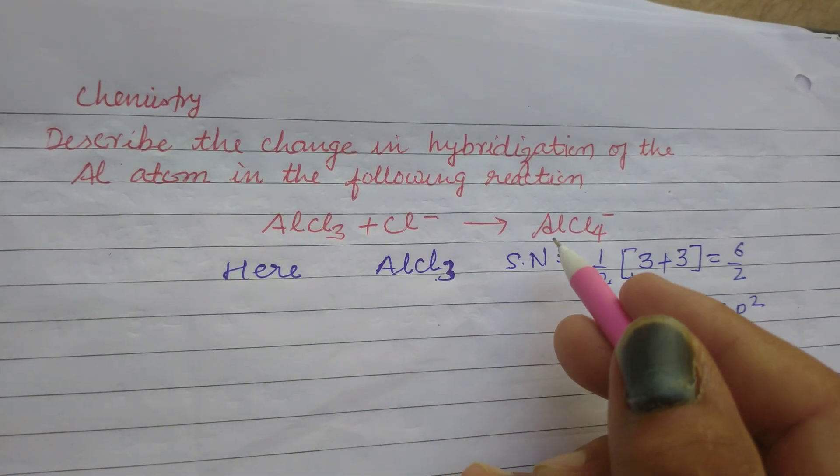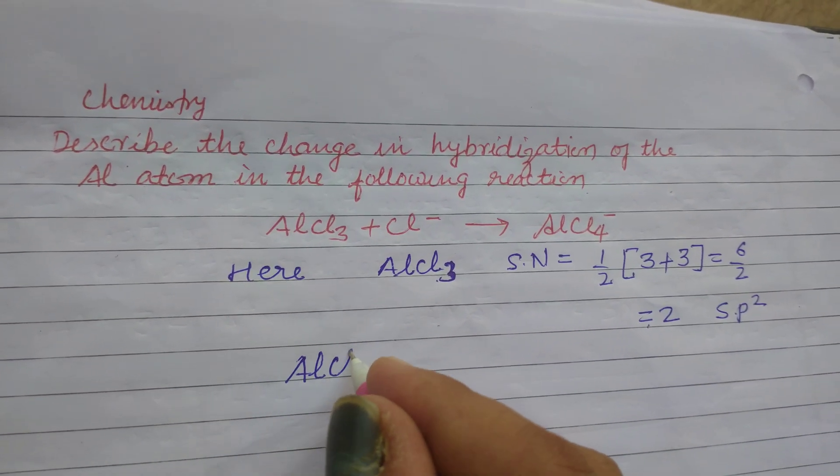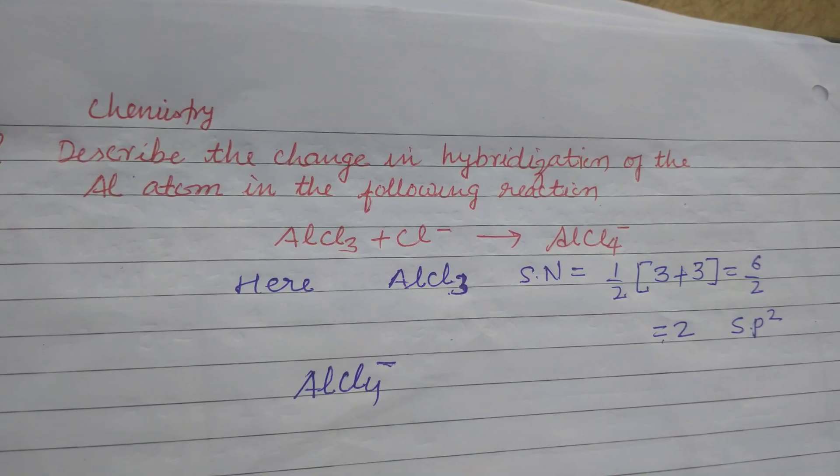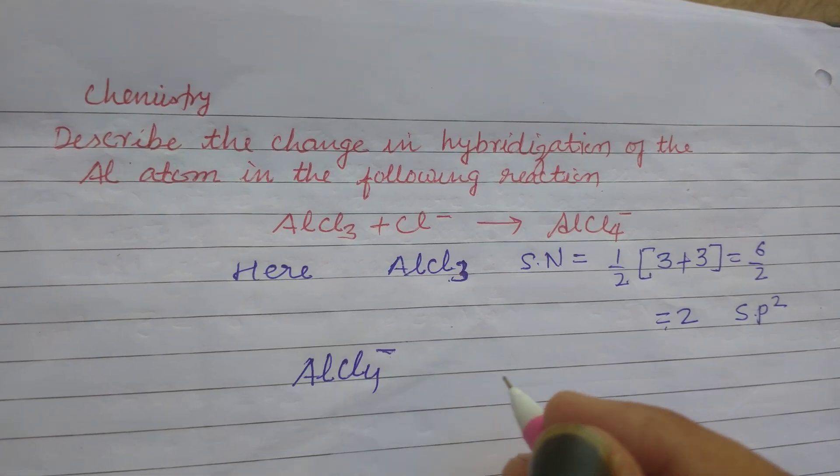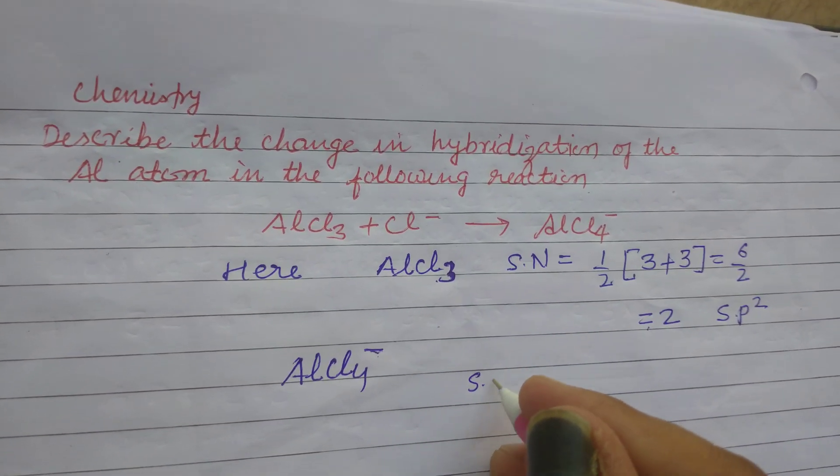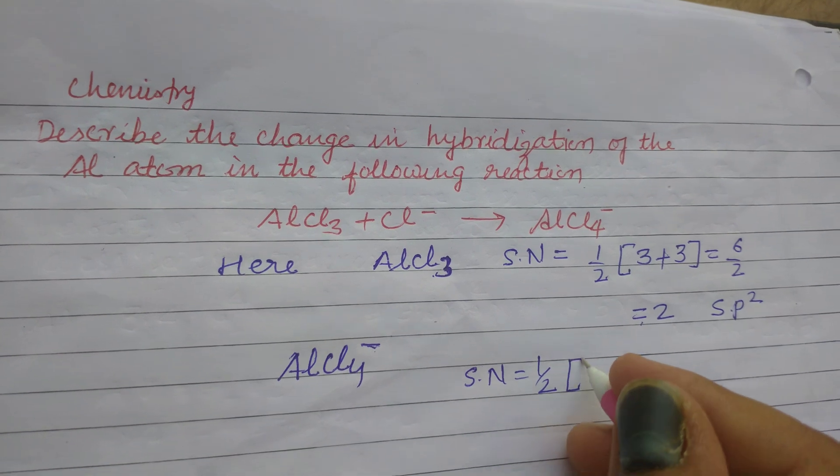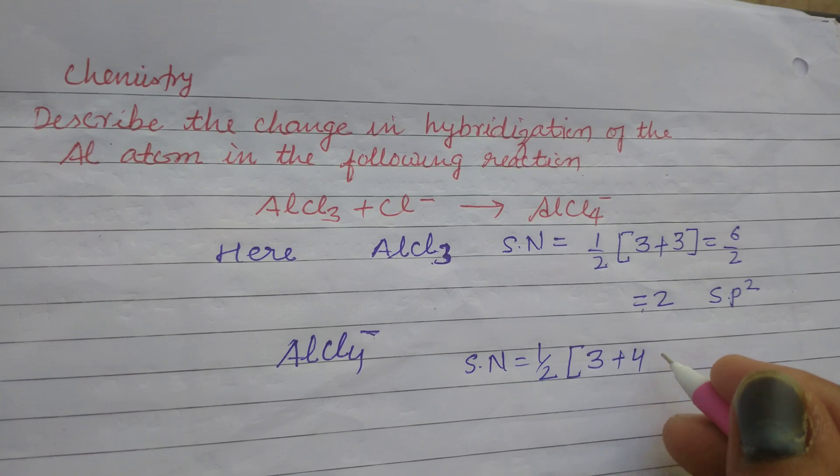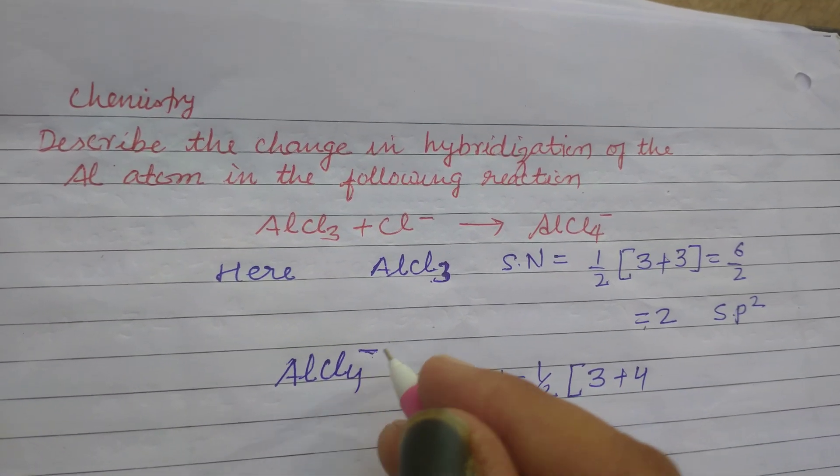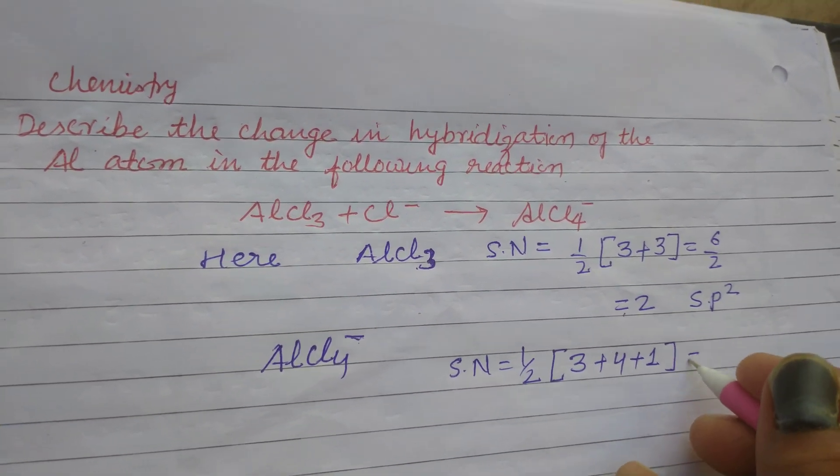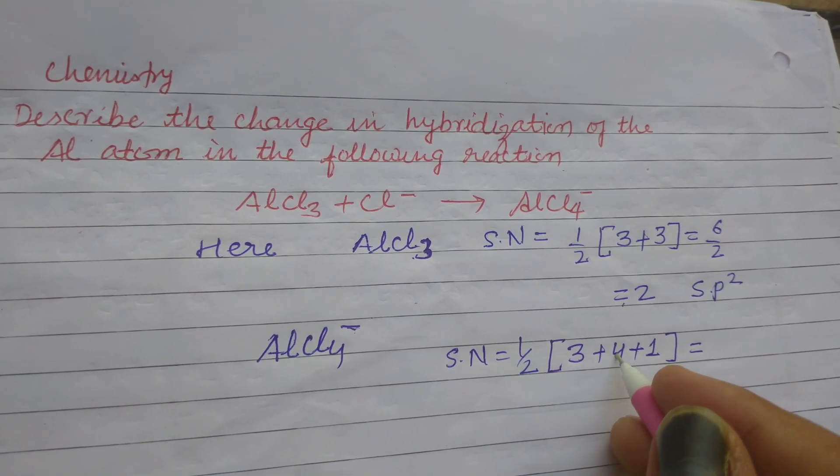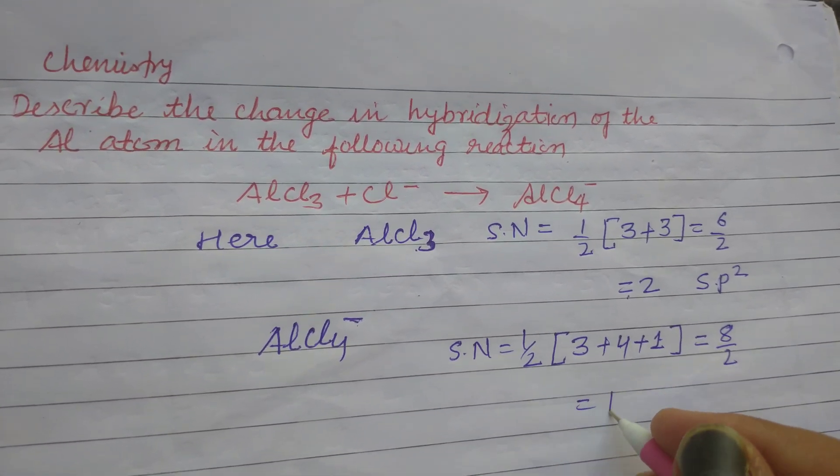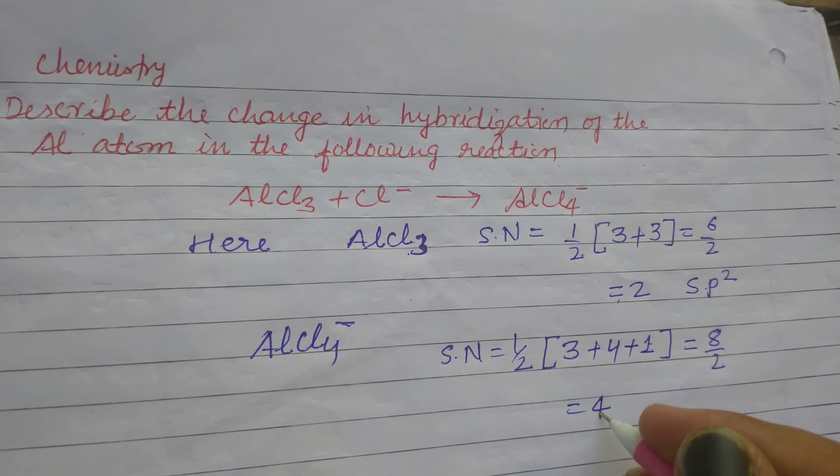When it changes to AlCl4 minus, aluminum tetrachloride, then the steric number changes to half of 3 valence electrons in aluminum and 4 chlorine atoms and 1 anion. The anion is added here. So we get a steric number of 3 plus 4, 7, 7 plus 1, 8, 8 by 2, it is 4. So for steric number 4, hybridization is sp3.